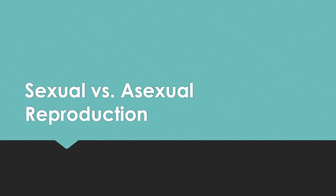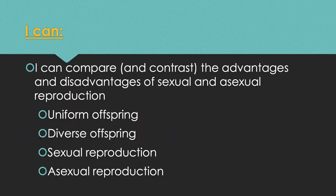Alright guys, so we've learned a bit about sexual versus asexual reproduction, and here's where I just clarify things and finalize it for your notes. So make sure you're taking notes from this slideshow. Your I can statement: I can compare and contrast the advantages and disadvantages of sexual and asexual reproduction, and a lot of that has to do with whether the offspring is uniform or diverse.